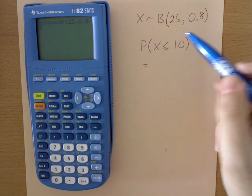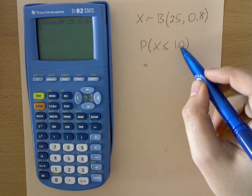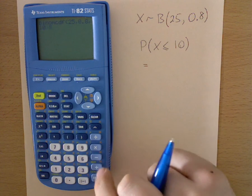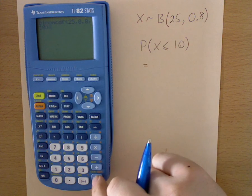And then you want to put in the x value that you're considering, so the 10. So 10, then bracket, and press enter.